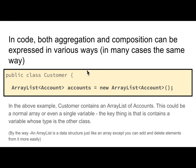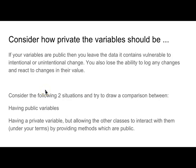You'll notice here that an array list contains the generics syntax, where you have to put the type of object that's going to be stored into it. That's the class that we're going to create for accounts.